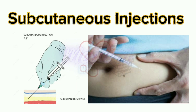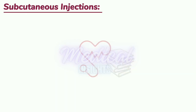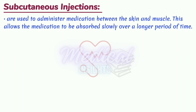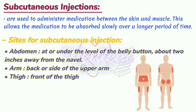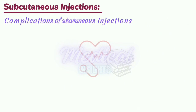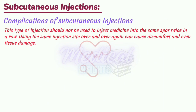Subcutaneous injections are used to administer medications between the skin and the muscle, allowing medication to be absorbed slowly over a longer period of time. Common injection sites include the abdomen at or under the level of the belly button about 2 inches away from the navel, the back or side of the upper arm, and the front of the thigh. This type of injection should not be used to inject medicine into the same spot twice in a row, as it can cause discomfort and even tissue damage.